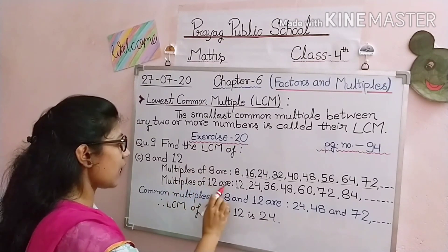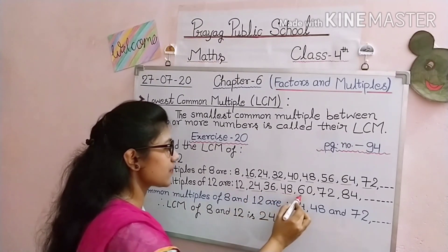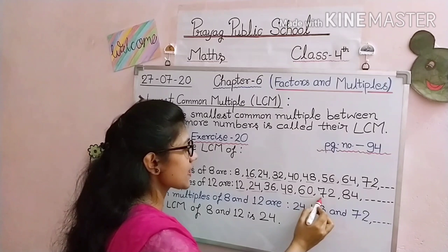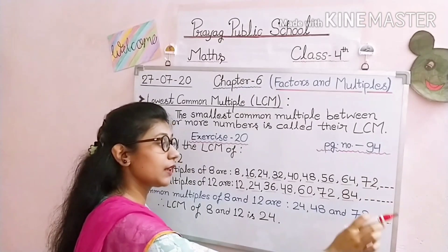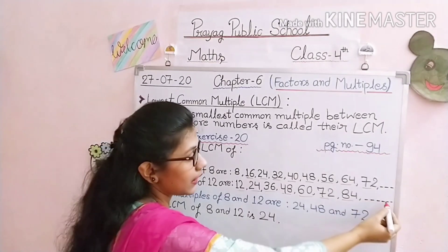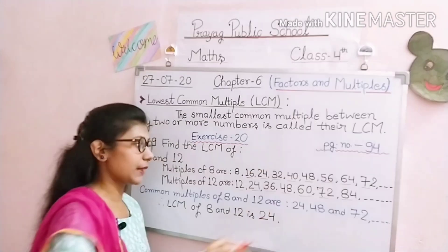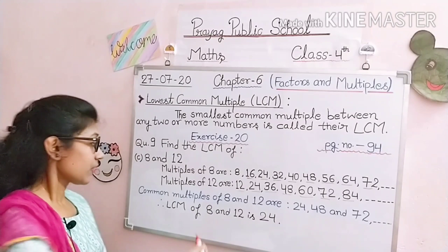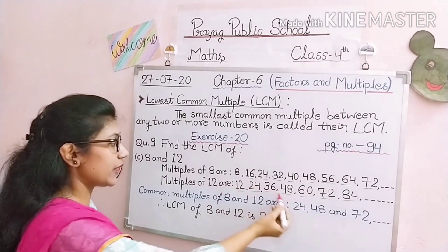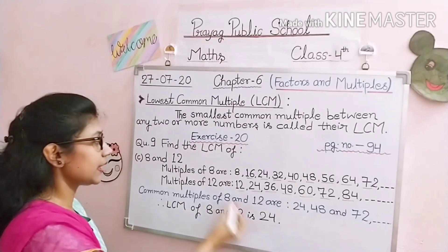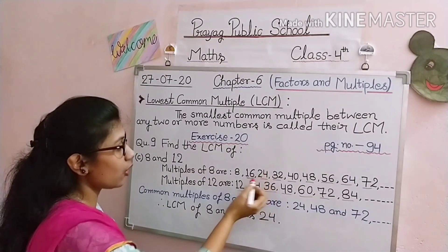Now we write the multiples of 12. Multiples of 12 are: 12, 24, 36, 48, 60, 72, 84, and so on. We write at least up to the 10th multiple and then continue with 'and so on.' For this, you need to know your tables. Now that we have written the multiples of both 8 and 12, we look for numbers that are common in both series — numbers that are multiples of both 8 and 12.